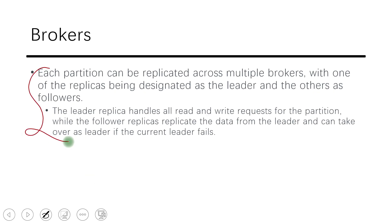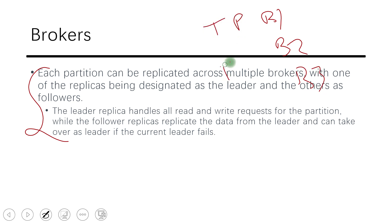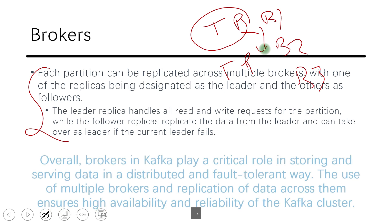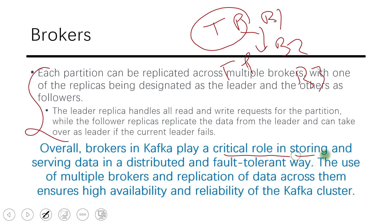Kafka also supports replication — copying data across multiple brokers — which is how its fault tolerance capability comes into picture. Each partition is also replicated across different nodes B1, B2, B3. The same partition exists on all nodes. Whenever a new message comes in, a leader partition coordinates the write and replicates the request to other partitions. Each broker has a leader partition that takes care of reading and writing messages.